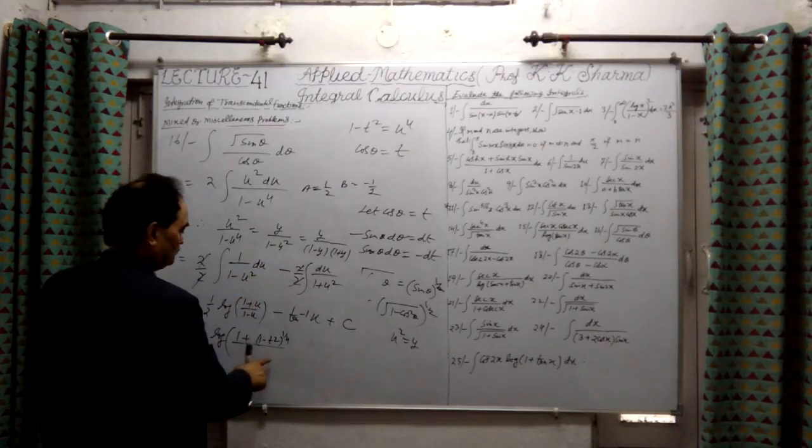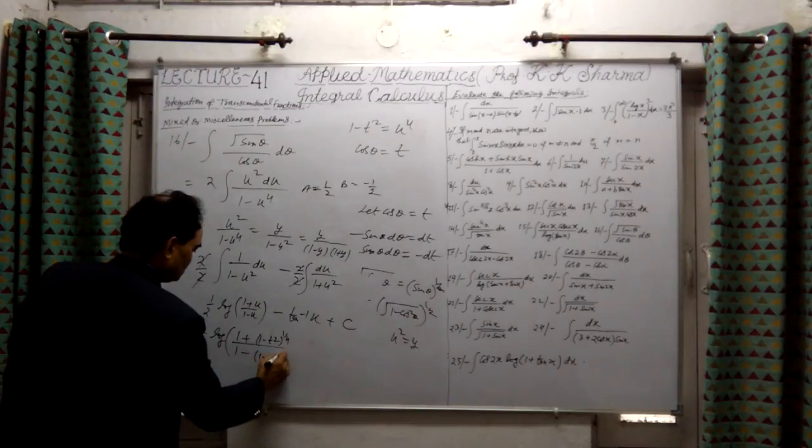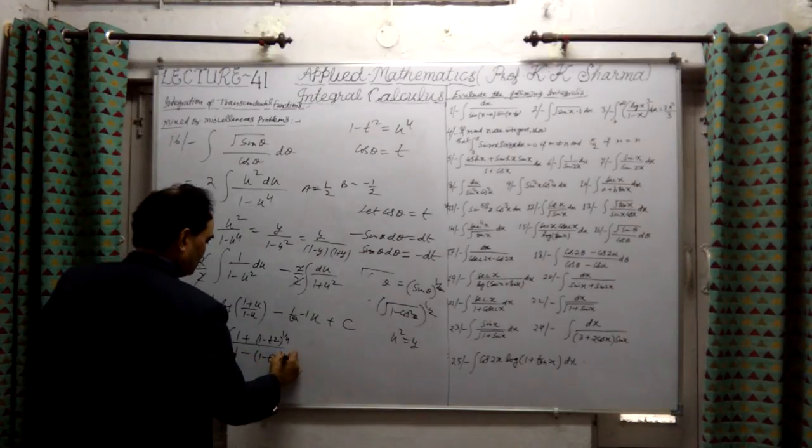Okay, this is u4 here, 1.4 power. This is 1 minus, and again, 1 minus t squared equal to 1.4.